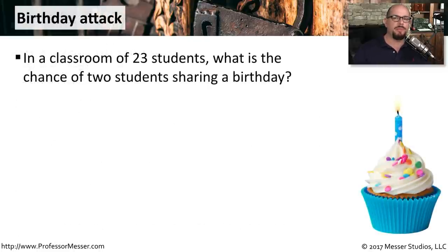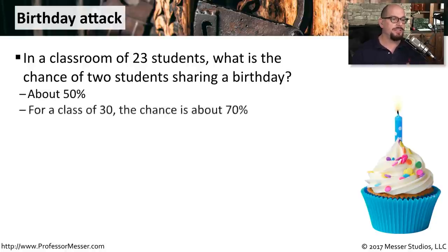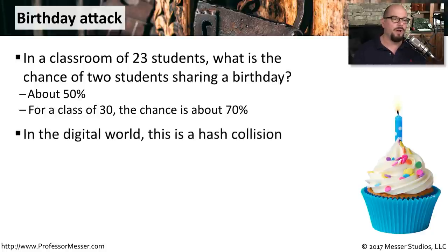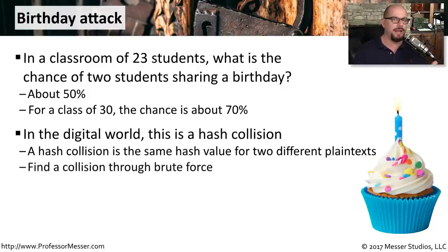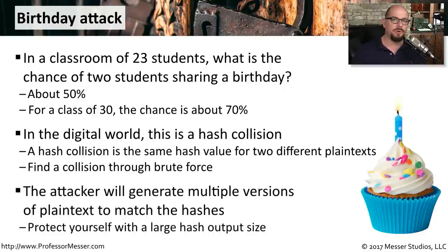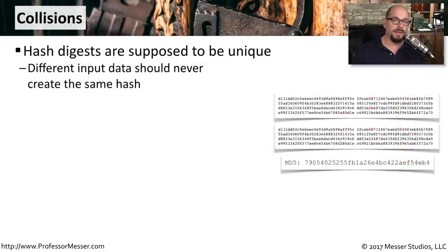If you have a classroom of 23 students, what is the possibility that two of those students share exactly the same birthday? It may surprise you to know that it's about 50%. If you increase the number of students to 30, there's almost a 70% chance that two students are going to share exactly the same birthday. In the digital world, we call this a hash collision — that's when you have the same hash value even though you might have different plain text being calculated for that hash. That's not something you'd like to see in your hashing algorithms. With a hash collision, the attacker would be able to use their own plain text to match a hash value that you're using for validation. You can use larger and larger hash sizes in an attempt to avoid any type of collision. This is a fundamental rule in hashing: every type of plain text should have a completely unique hash associated with it, and there should never be a situation where the hash is identical.